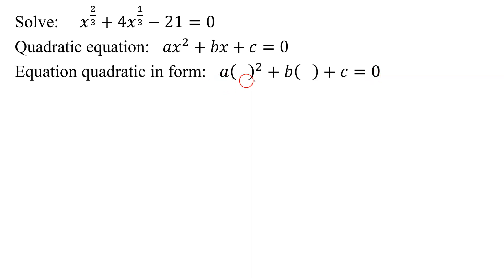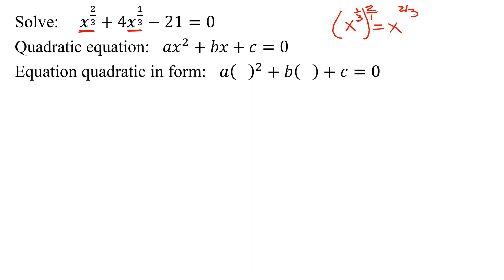Do I have an equation that's quadratic in form? Let's look at the variable in the b term — I get x to the one-third. And what happens if I take that and square it? Do I get the first term in my equation? When you have x to the one-third all squared, remember, you multiply the two exponents and you get x to the two-thirds. So this equation is quadratic in form because I have a times x to the one-third all squared plus b times x to the one-third plus c equals zero.